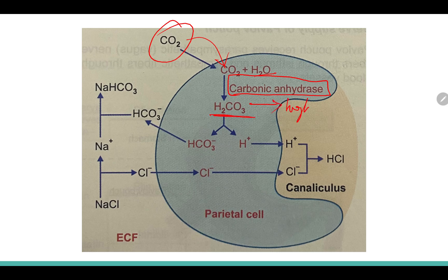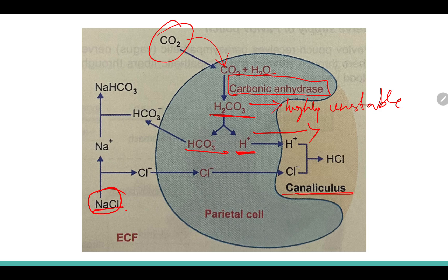This carbonic acid is highly unstable, so it splits into bicarbonate ion and hydrogen ion. The hydrogen ion goes into the canaliculi. In the extracellular fluid (blood), sodium chloride is present and it splits into sodium and chloride ions. The chloride ion goes into the parietal cells and then into the canaliculi, where hydrogen and chloride ions combine to form hydrochloric acid.